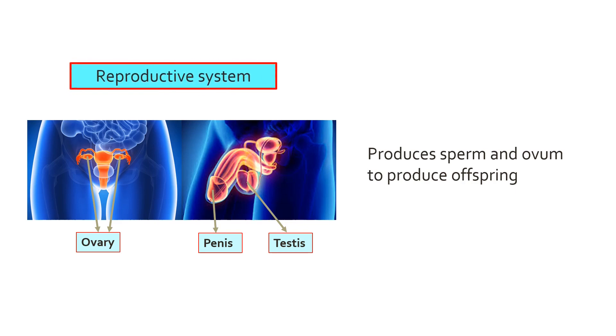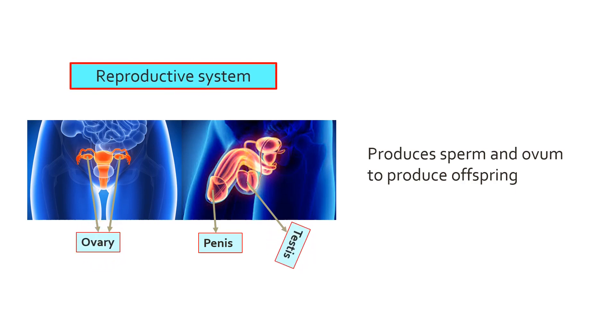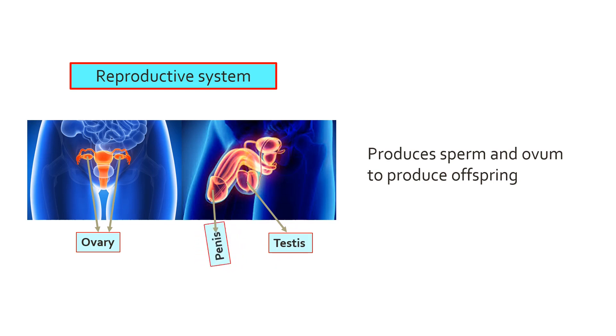Reproductive system: organs involved are the ovaries, testes, and related reproductive organs.